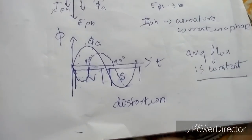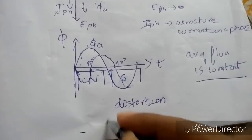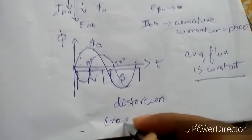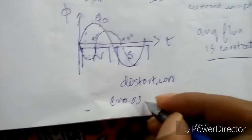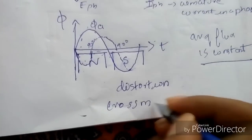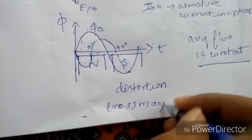This means that resistive load does not reduce or increase the field flux, but there is a distortion in the distribution of flux. So this can be called cross magnetization.